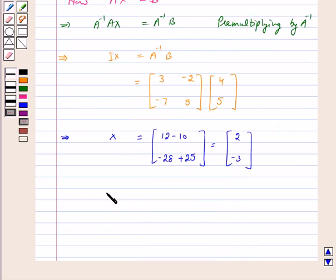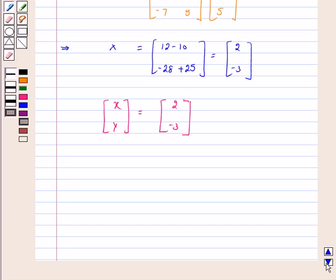Now X is equal to [x; y], this is equal to [2; -3]. Equating the corresponding elements we get x is equal to 2 and y is equal to minus 3.